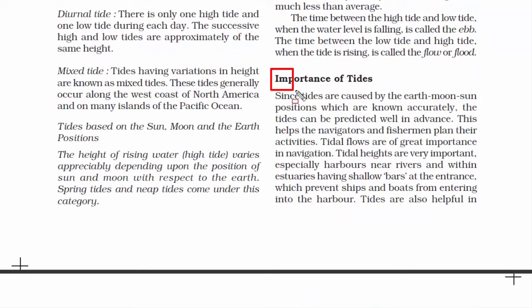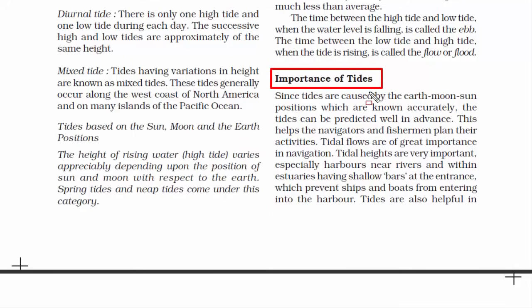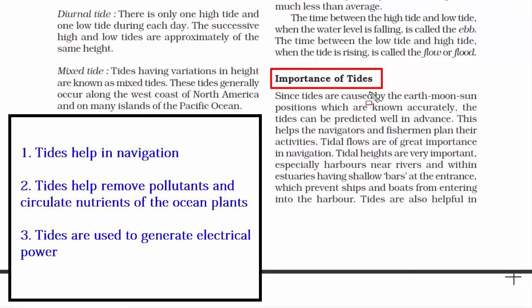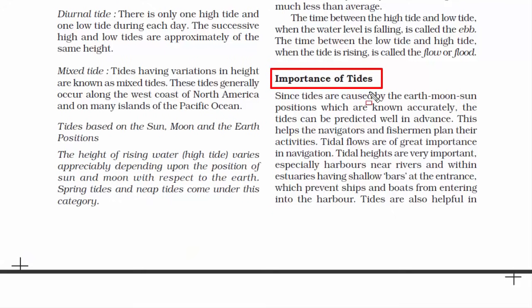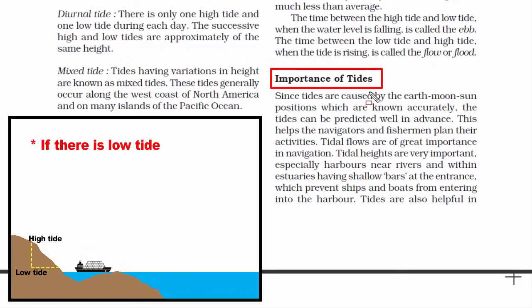Now the importance of tides. Since the position of the sun and moon can be predicted, it is also easy to predict when there will be high and low tides. The first advantage: tides help in navigation. High tides raise the water level, making it safe for large ships to enter and leave harbours.